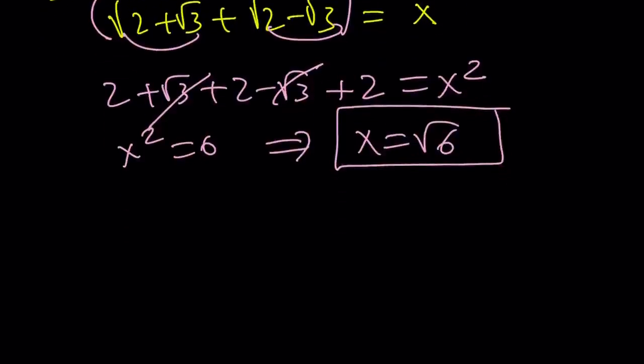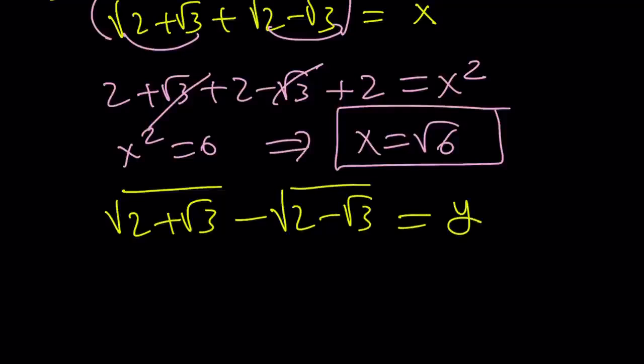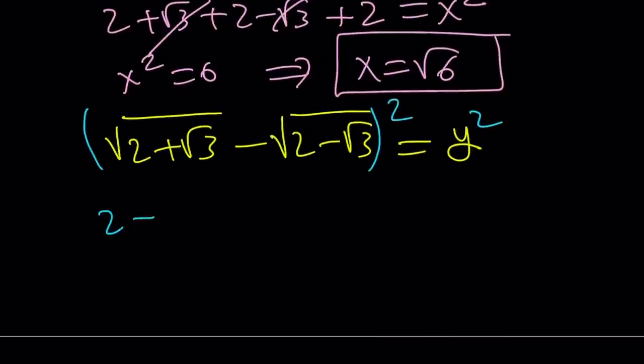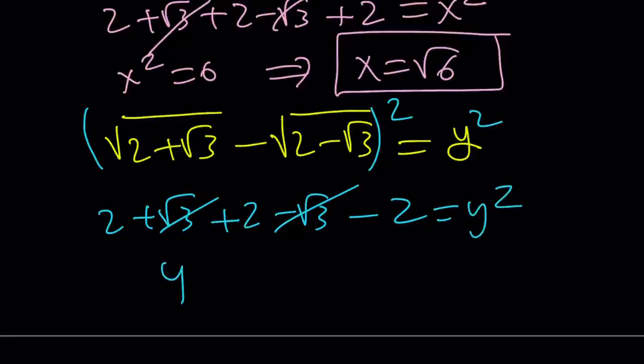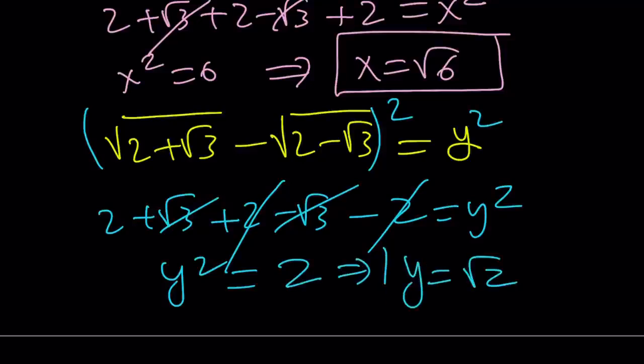This is not what we're looking for, but we're going to use this. Let's go ahead and take a look at something similar to this, which is the difference. And I'm going to call that y. And don't ask why. So, now we're going to square both sides again. And this time, we're going to get 2 plus root 3 plus 2 minus root 3 minus 2. As you know, the product is 2ab. These two cancel out. Y squared becomes, and the 2s cancel out. Y squared becomes 2, which means y becomes square root of 2.